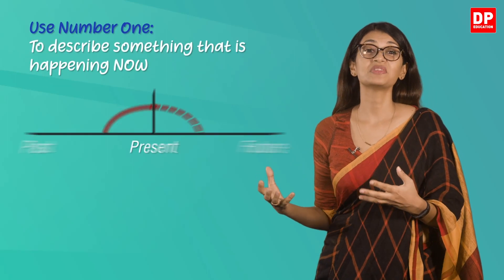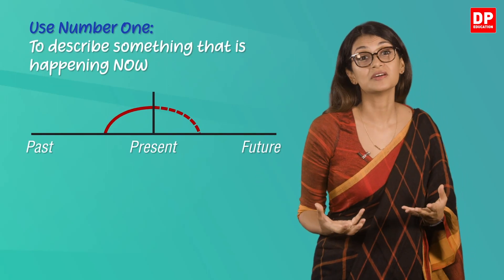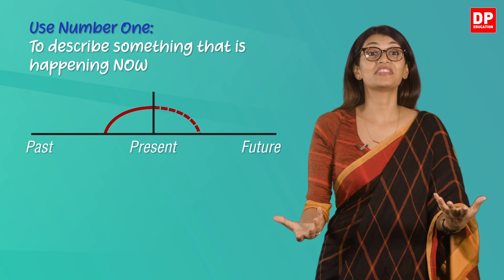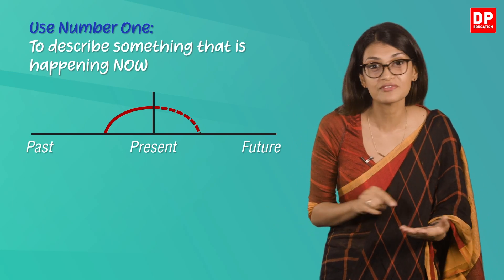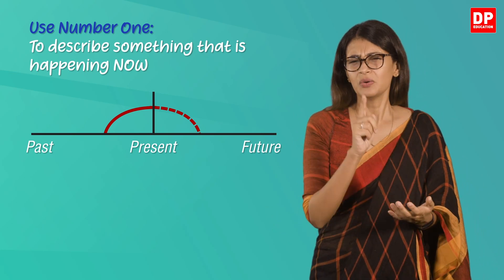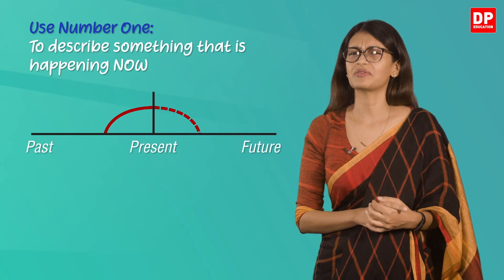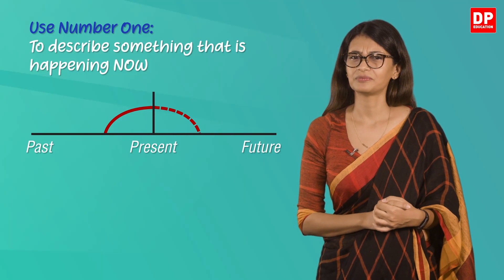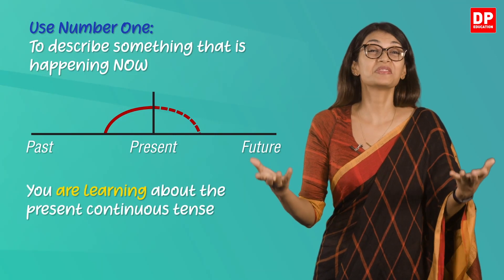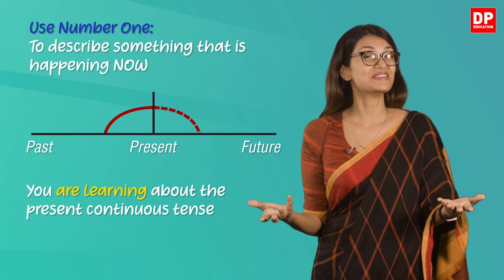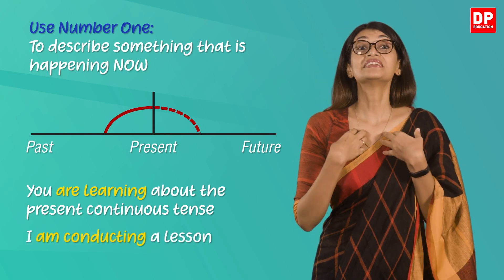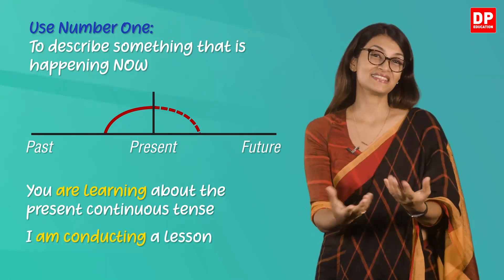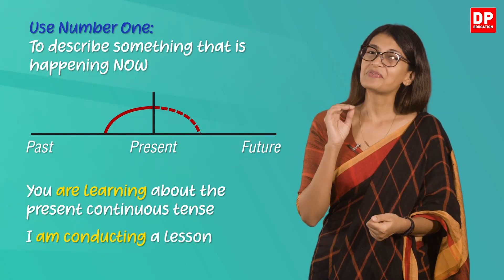Let's look at where exactly the present continuous tense is used. Use number one: use the present continuous with normal verbs to express an idea that is happening now, at this very moment. What are you doing right now? You are learning about the present continuous tense. I am conducting a lesson, explaining examples in English.